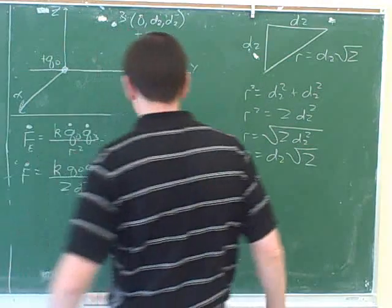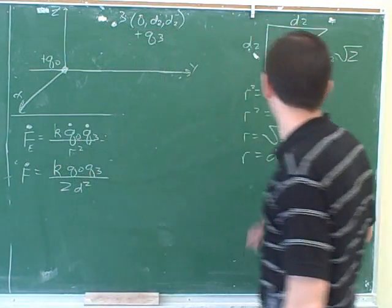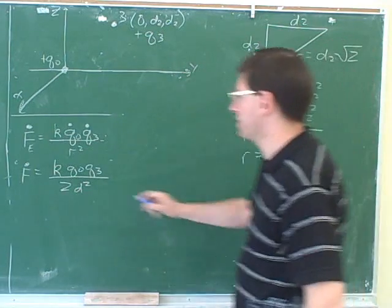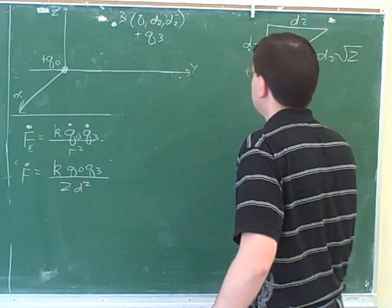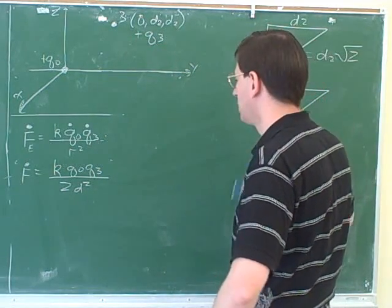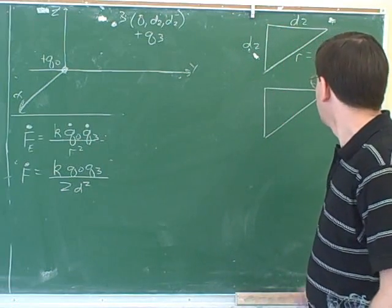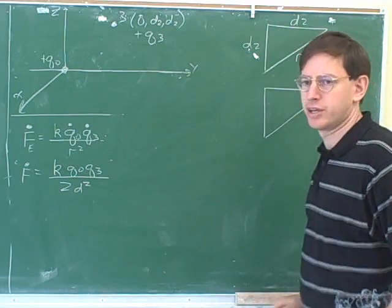Let's catch up with each other here. So you were figuring out the magnitude of the overall force. For r squared, what we already knew r squared was 2d2 squared. So we can just plug that in over here. And now it looks like you're making a force triangle. This represents the overall force. So let's put the arrows on this overall force.